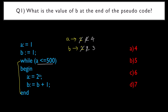Again, 4 is less than or equal to 500 — condition is true. So a := 2 power a, which is 2 power 4. That is 2 × 2 × 2 × 2 = 16. So a becomes 16. Then b := b + 1, so b becomes 4.